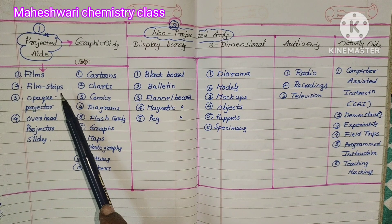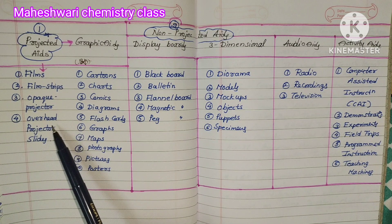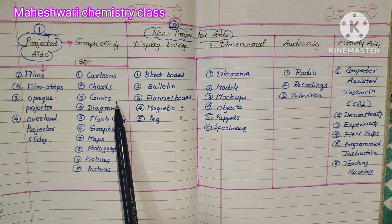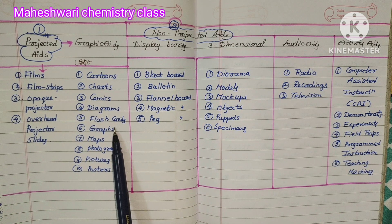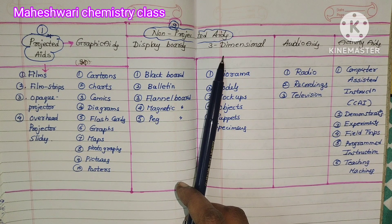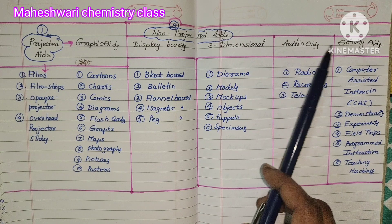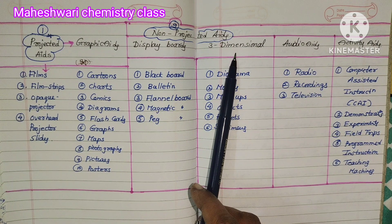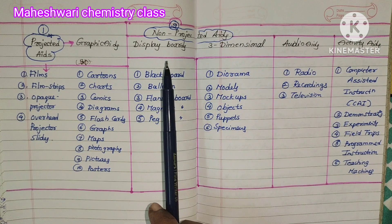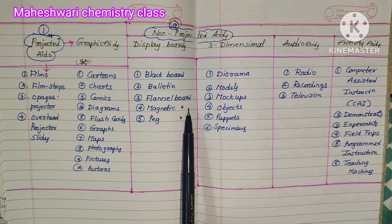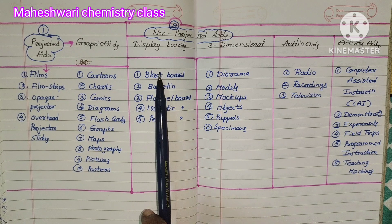Projected aids include films, film strips, opaque projector, overhead projector, and slides. Graphic aids include cartoons, charts, comics, diagrams, flashcards, graphs, maps, photographs, pictures, posters, etc. Non-projected display boards include blackboard, bulletin board, flannel board, magnetic board, and peg board — all types of boards.